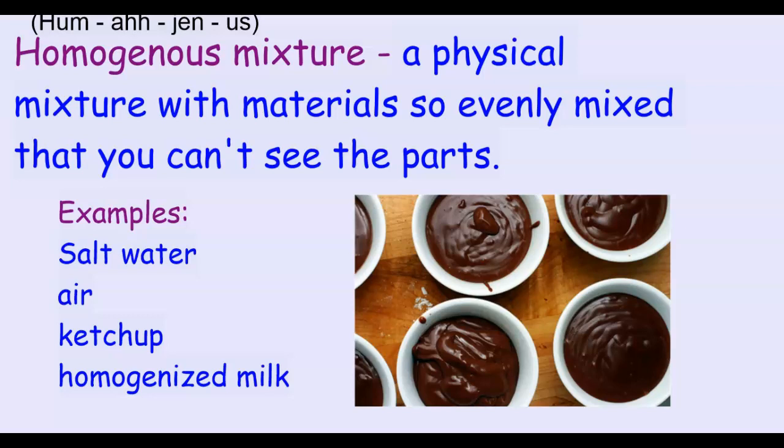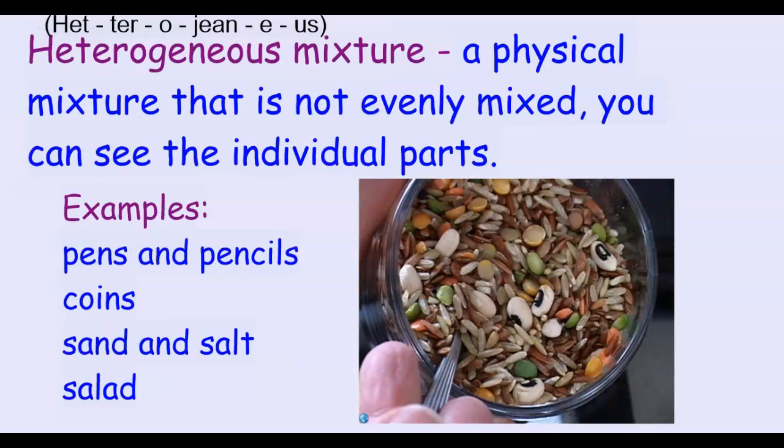What about a mixture where you can see the parts or that does seem to have different pieces? Those are called heterogeneous. Heterogeneous mixtures are physical mixtures that are not evenly mixed. They're not blended as well - you can actually see the parts. In our picture we have rice and different ingredients for soup, but we can see all the different parts. They may not be as evenly blended. Pens and pencils, different kinds of coins, sand and salt, salad - these are things that are a little harder to blend. They have larger pieces, and if you can see the pieces, they're probably heterogeneously mixed.